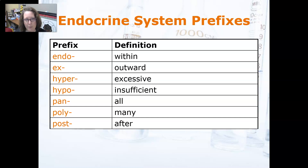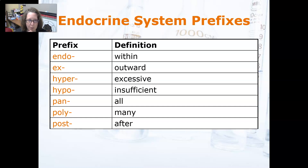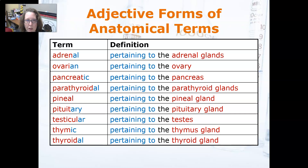Hyper is excessive. Hypo is insufficient. Pan is all — for example, if something affects all the hormones of the pituitary gland, pan would be the appropriate prefix. Poly means many, and post means after.